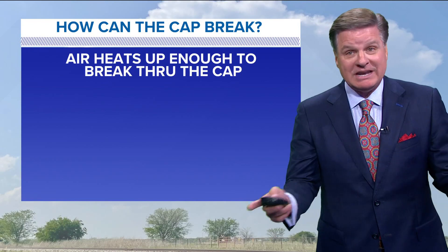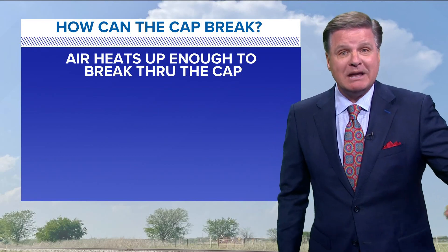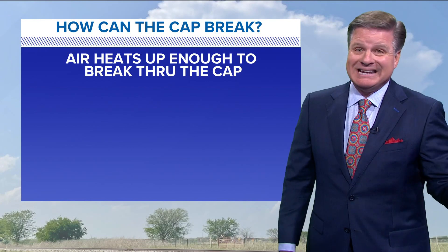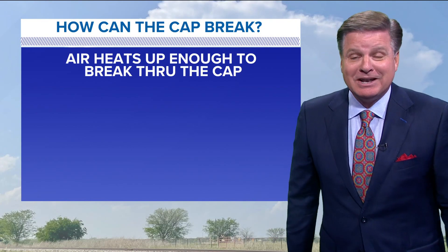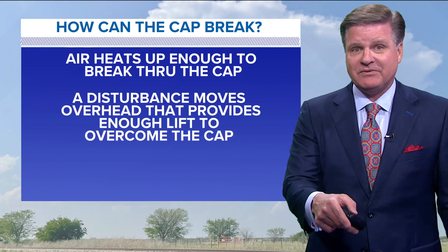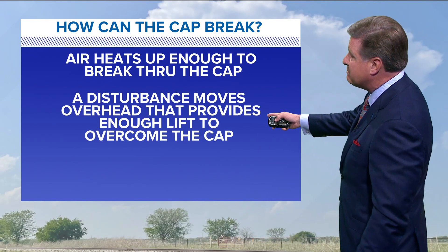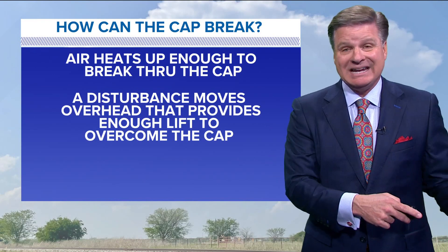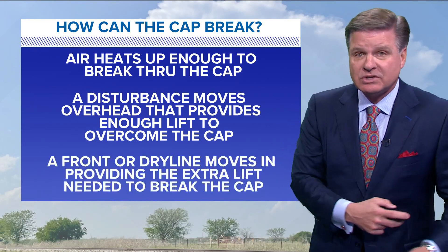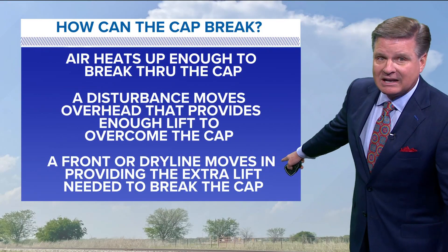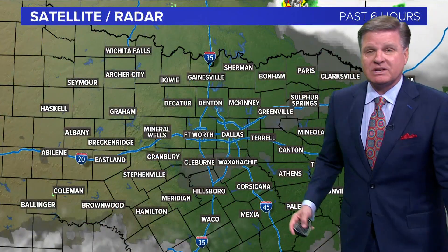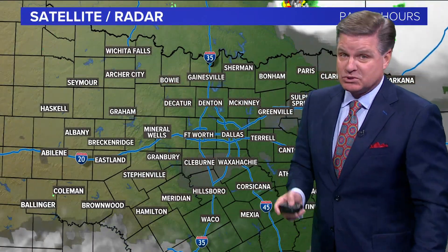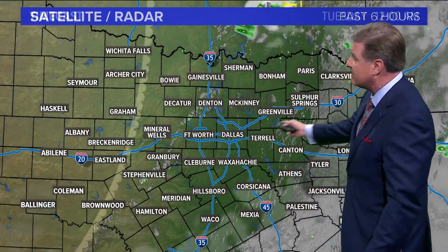We could have a little bit of rain or maybe a rumble of thunder, but thunderstorms will struggle to form most of the time, like they did tonight, and they'll fizzle out before we even have any lightning. So how can you break a cap? The air needs to heat up enough — today we needed 94 degrees, but we only made it into the upper 80s, so we didn't have warm enough air. A disturbance has to move overhead to provide enough lift to overcome the cap. The dry line didn't even make it into the Dallas-Fort Worth area — it stayed well to the west. We didn't have a cold front or dry line move in to provide extra lift, so the cap stayed in place. It didn't break, and we didn't have any thunderstorms — certainly no severe thunderstorms across the area tonight.